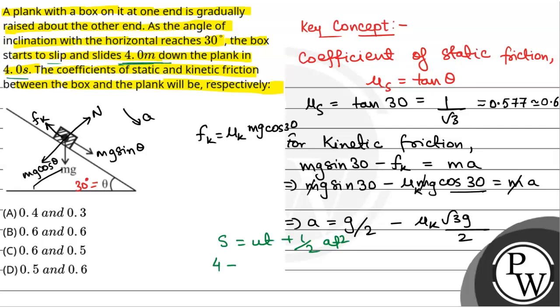So 4 meters will be the displacement. U t will be 0 plus half into A. We have to find it out from here, and t is 4 seconds, so 4 squared. So from here A is equal to 0.5 meters per second squared.